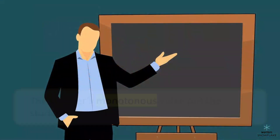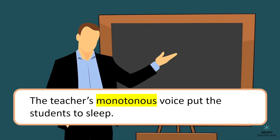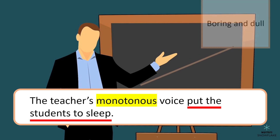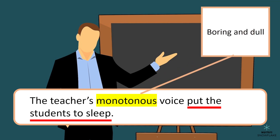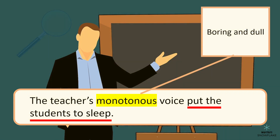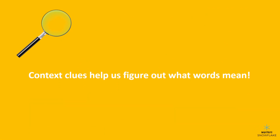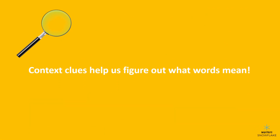The teacher's monotonous voice put the students to sleep. What does monotonous mean? We know that the teacher's voice made the students fall asleep. So monotonous must mean boring and dull. Context clues are like little detectives that help us figure out what words mean — just look at the surrounding words and sentences to get a hint.